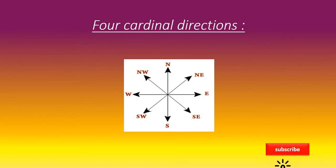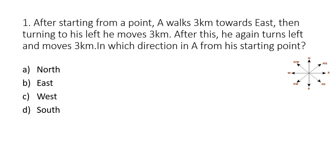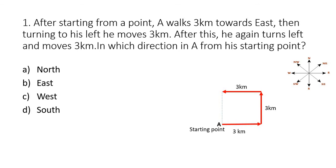Let's see some examples in the direction sense test. The first question: After starting from a point, A walks three kilometers towards east, then turning to his left he moves three kilometers. After this, he again turns left and moves three kilometers. In which direction is A from his starting point? Assuming A at the starting point, he walks east, turns left going north, then turns left again heading west. Thus A is in the north position from his starting point.